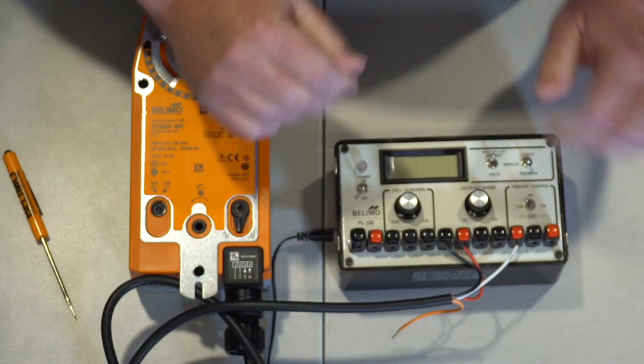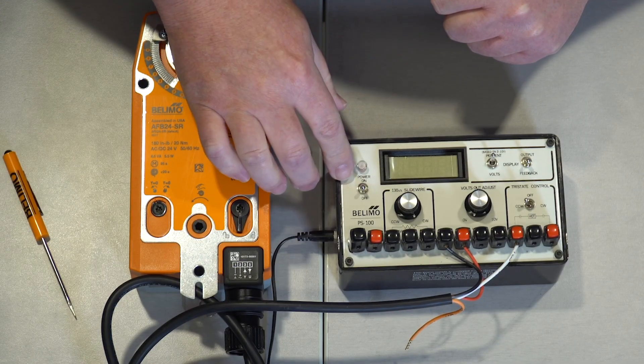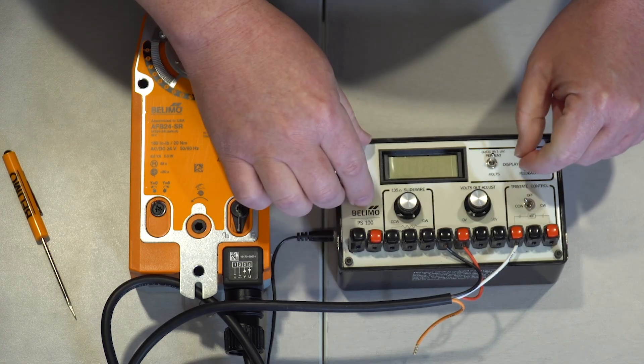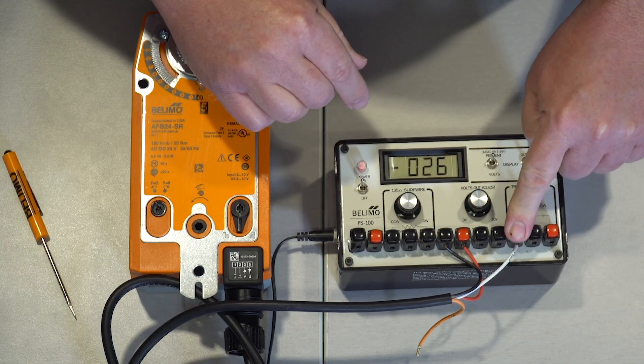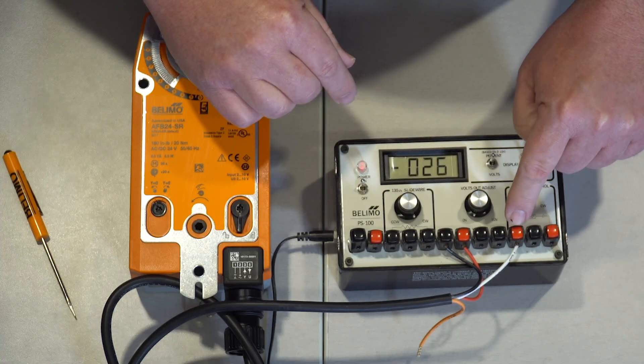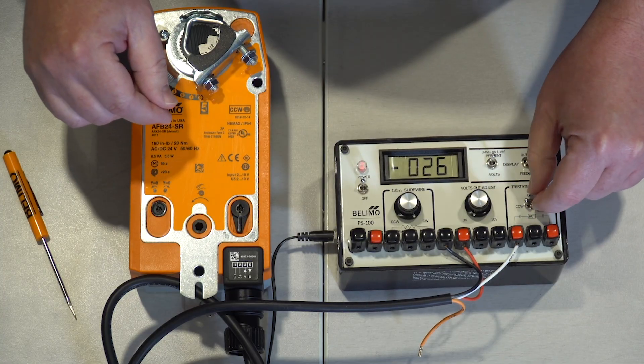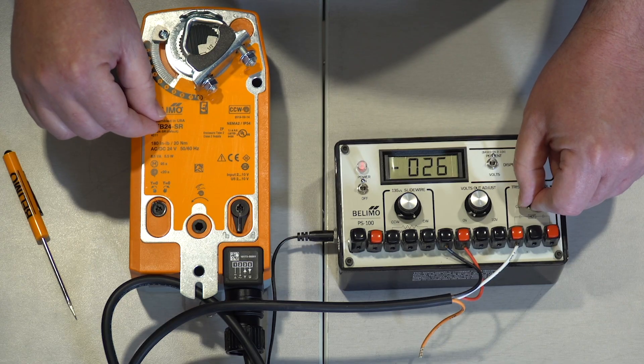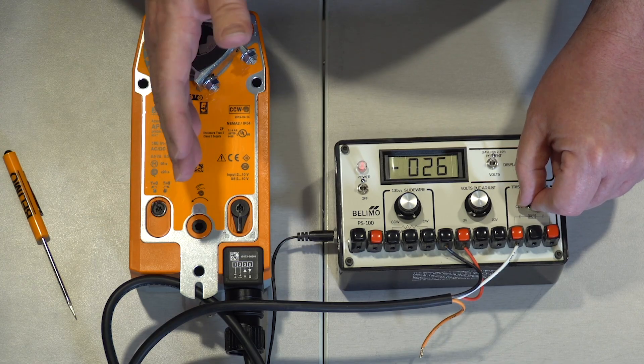So, two ways that we can have the AFB24-SR function for on-off. We can apply 24 volts to the white input, and that will drive it open when 24 volts is applied or drive it closed when 24 volts is removed, so the motor is powering it open or closed.